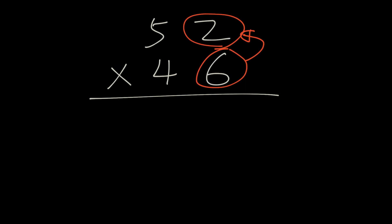Here is another example. 52 times 46. 6 times 2. 12 plus the 1. 6 times 5 is 30 plus the 1 is 31. Then we want to cross out what we've done. Then we want to cross out what's being applied.